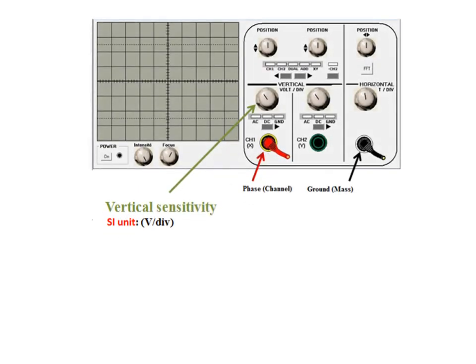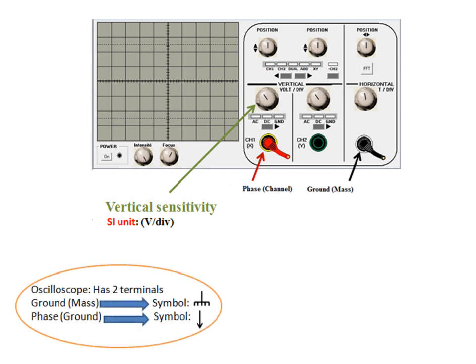Let's take a look at this picture. We can see that the oscilloscope has a screen and scale keys that represent a vertical sensitivity and another one for horizontal sensitivity. In this lesson we'll explain vertical sensitivity. Vertical sensitivity is a vertical scale with the unit volt per division. The oscilloscope has two terminals: ground (or mass) and phase.